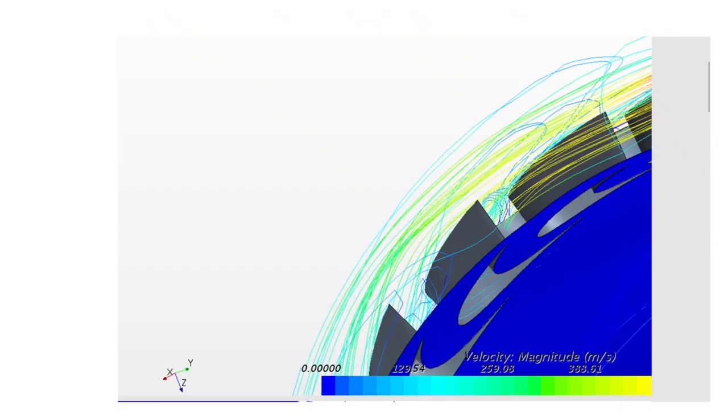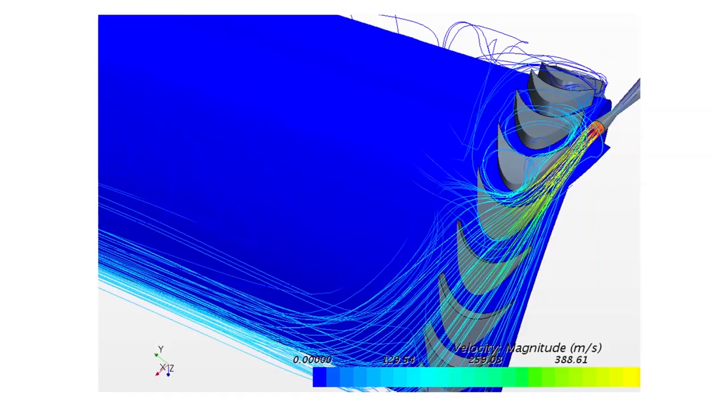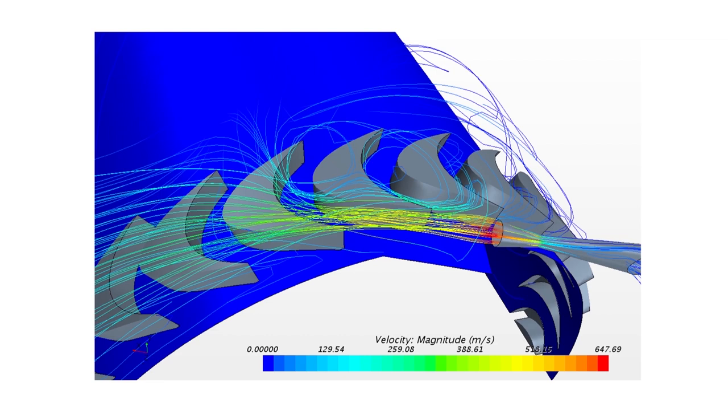For our air blades in STAR-CCM, we extracted the force applied to the suction phase by the flow. This provided us with the efficiency, torque and power output for our models. The model which had the highest efficiency and power output was selected as our most optimal blade.